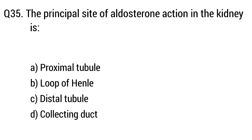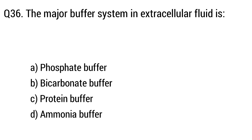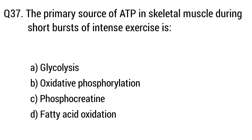Question 35. The principal site of aldosterone action in the kidney — the right answer is Option C: Distal tubule. Question 36. The major buffer system in extracellular fluid — the right answer is Option B: Bicarbonate buffer.